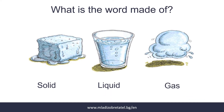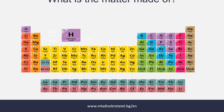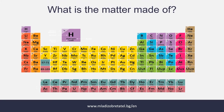You might ask, but what is matter made of? Elements. Elements such as oxygen, carbon, gold, or silver. There are approximately 104 different known elements in the universe.